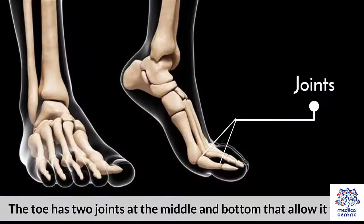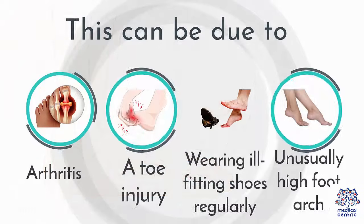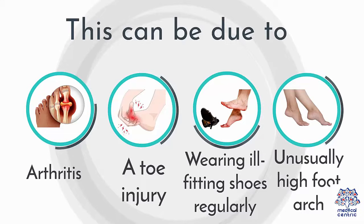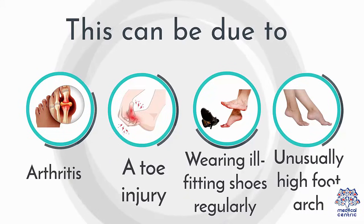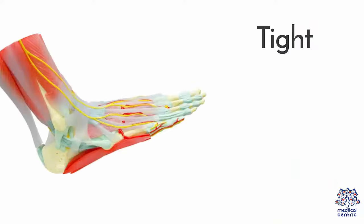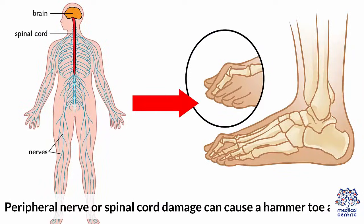Causes. The toe has two joints at the middle and bottom that allow it to flex. A hammer toe forms when the middle joint is stretched or bends downwards. This can be due to: 1) arthritis, 2) a toe injury, 3) wearing ill-fitting shoes regularly, 4) an unusually high foot arch, 5) a bunion adding pressure, which causes the big toe to shift inwards and point towards the next toe, 6) tight tendons or ligaments in the affected foot, 7) peripheral nerve or spinal cord damage.